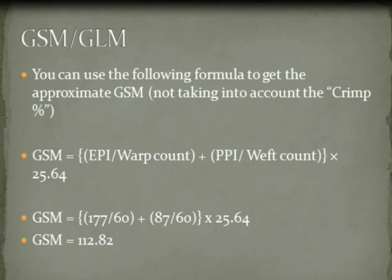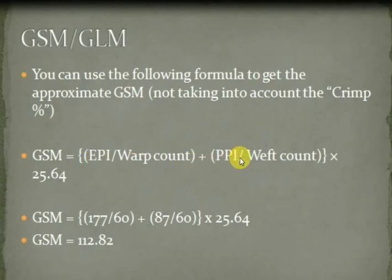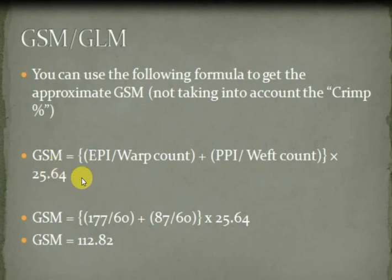First we see the formula for GSM. You can use the following formula to get the approximate GSM, not taking into account any crimp percentage. The formula is: GSM = (ends per inch ÷ warp count + picks per inch ÷ weft count) × 25.64. This is the standard formula for any type of fabric GSM calculation.